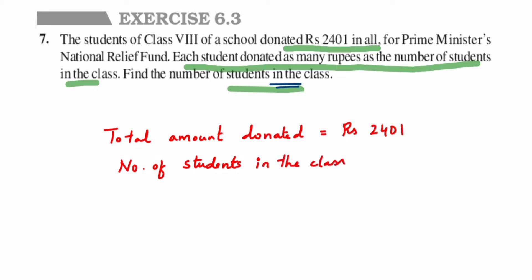To solve the square root of 2401, you can apply many methods — long division or prime factorization, whichever is easy. Here I'm going to use the prime factorization method. Let me draw the prime factorization.